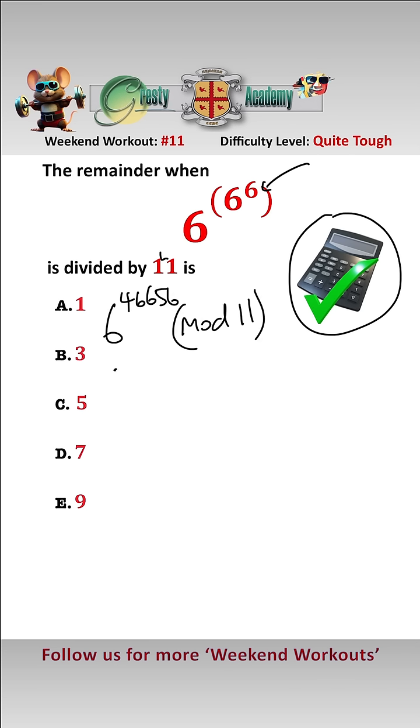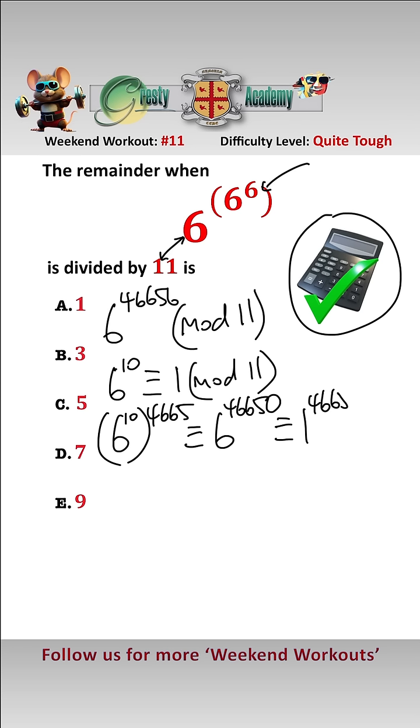Now using Fermat's Little Theorem, because 11 and 6 are co-prime, we know that 6 to the power of 10 is equal to 1 mod 11. Therefore, 6 to the power of 10 to the power of 4665 is equal to 6 to the 46650, which is equal to 1 to the 4665, which is equal to 1 mod 11.